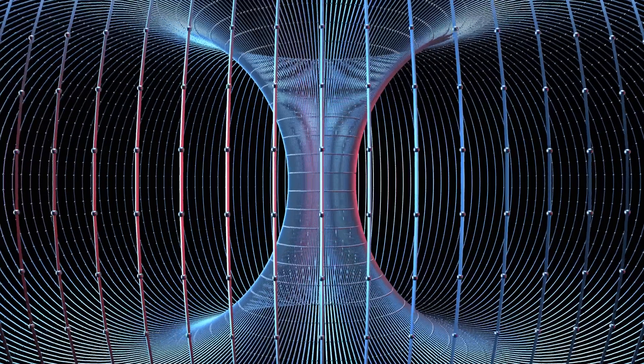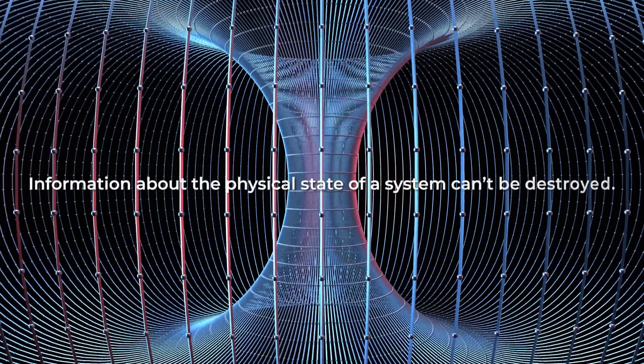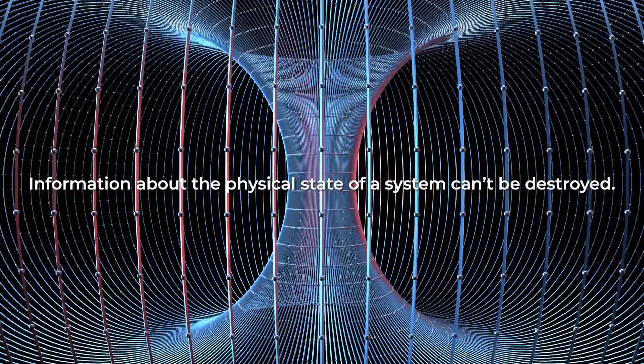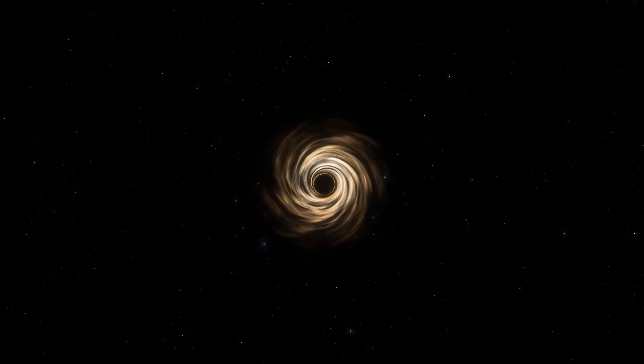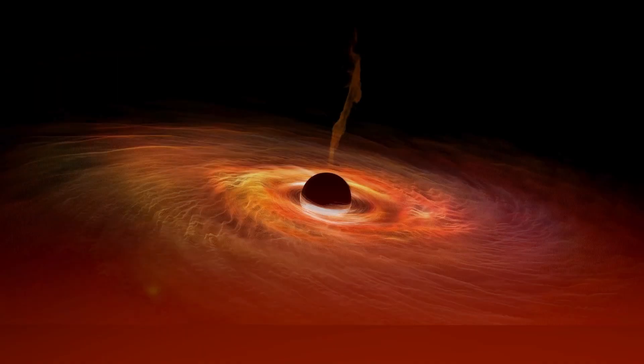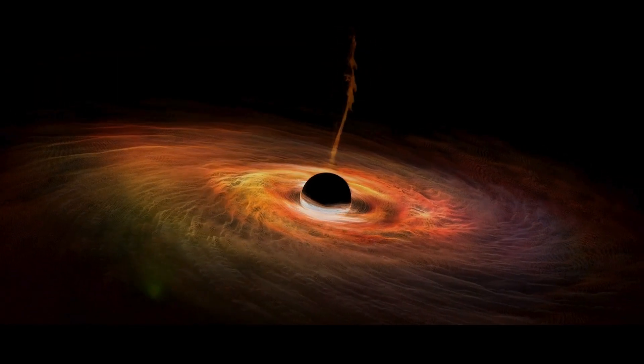According to the principles of quantum mechanics, information about the physical state of a system can't be destroyed. But if a black hole can vanish, does this mean information is lost forever too? This is the moment where it gives birth to a paradox.